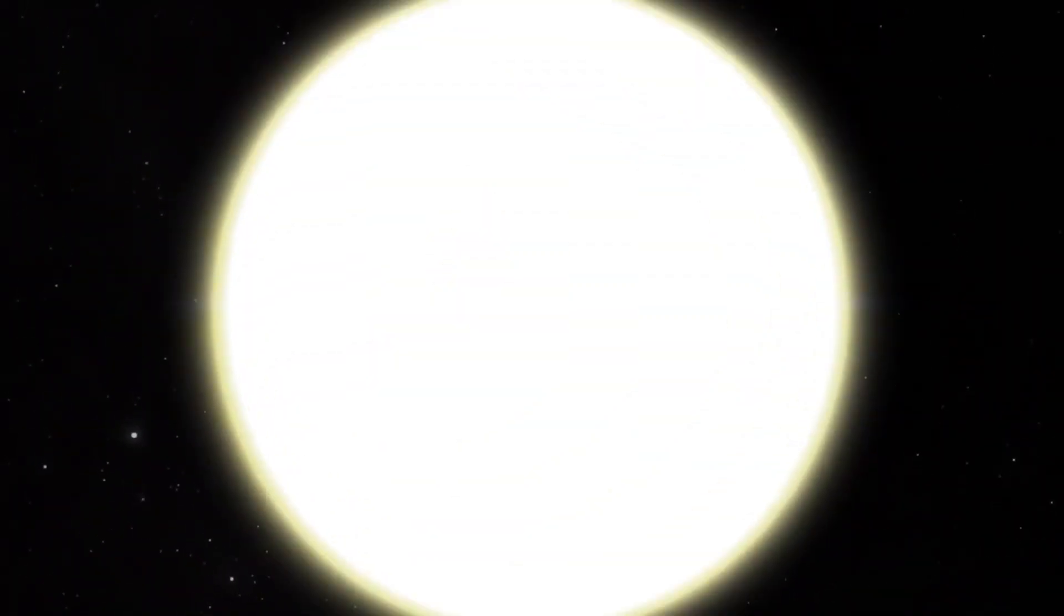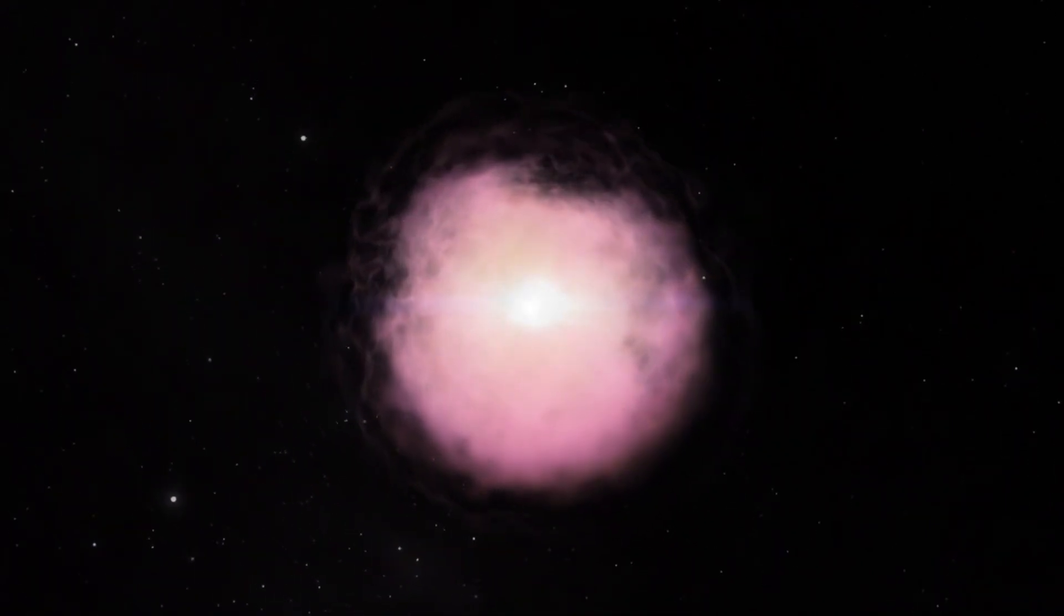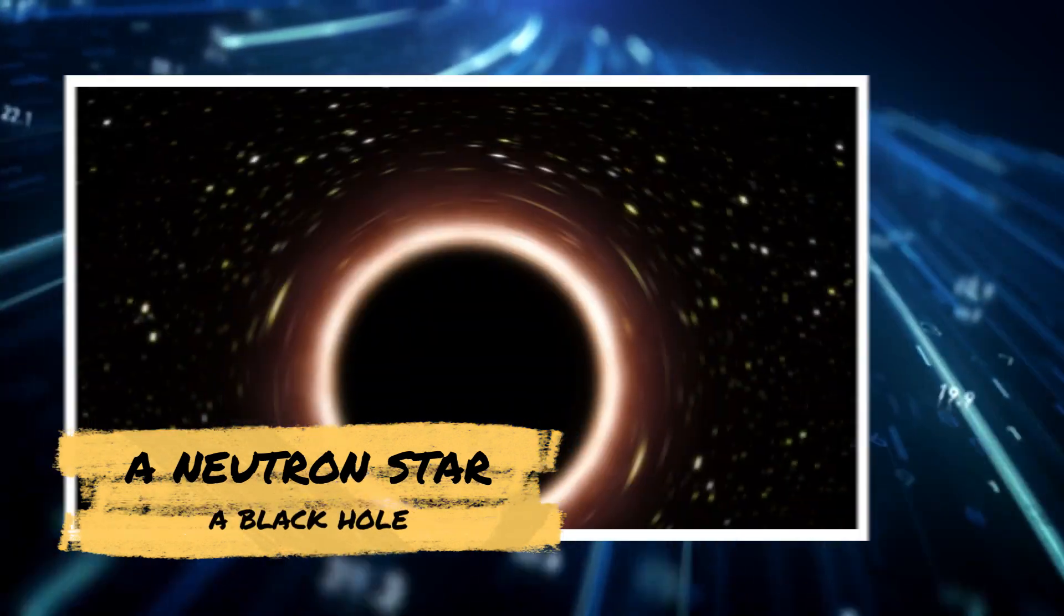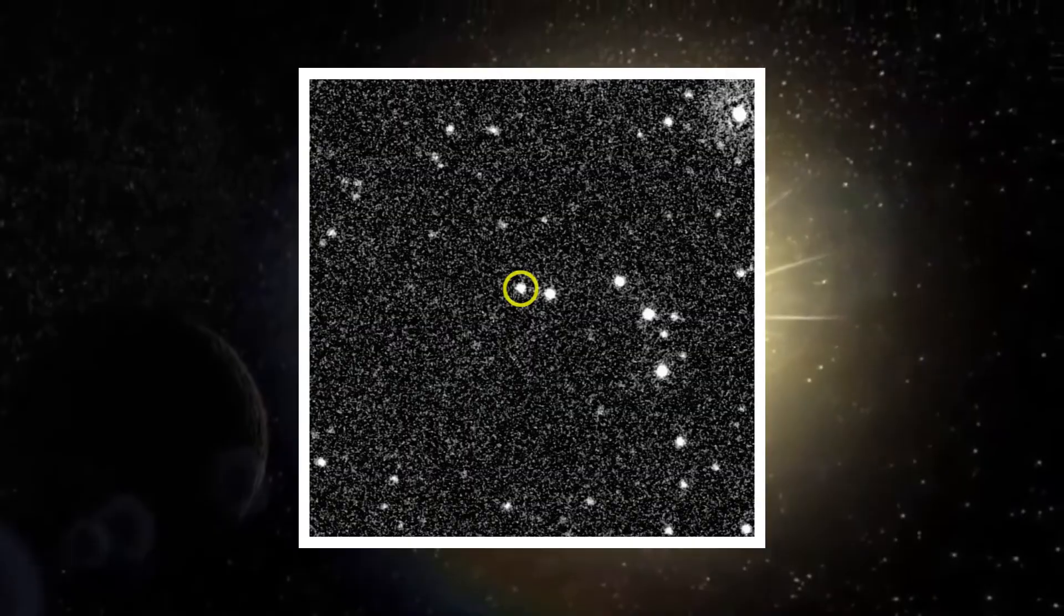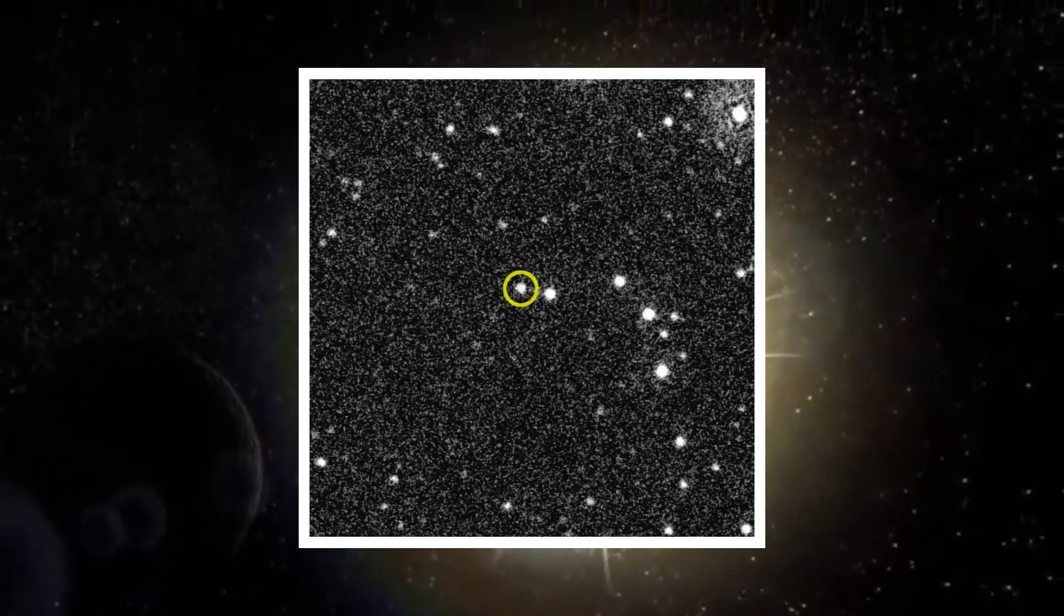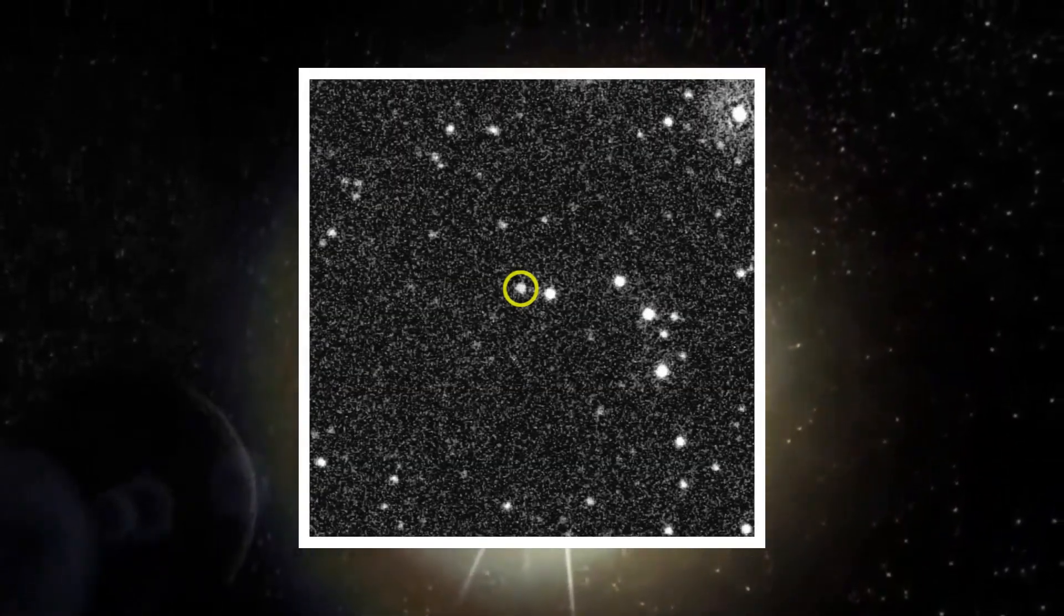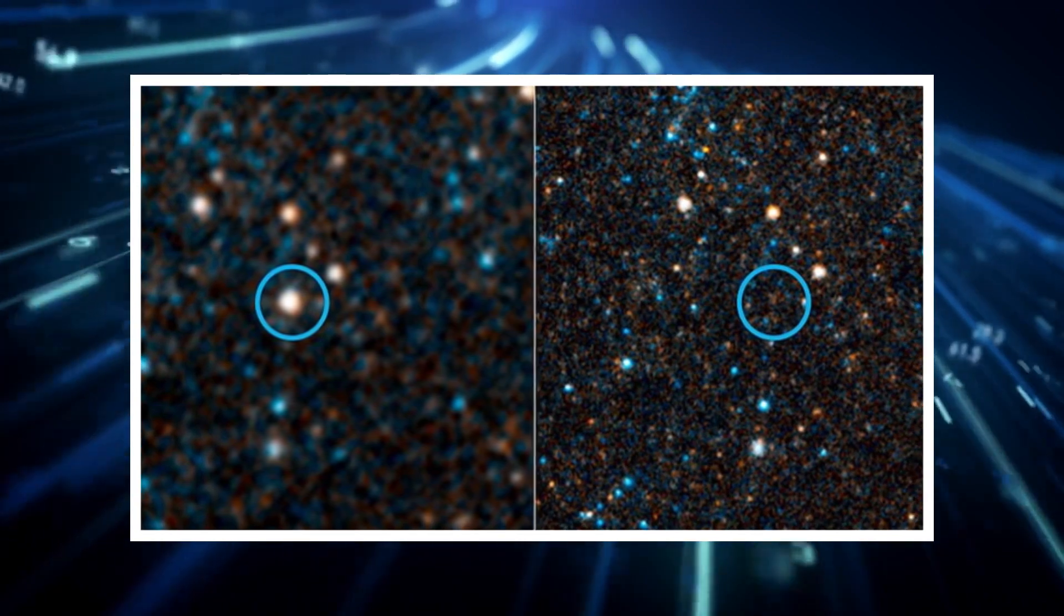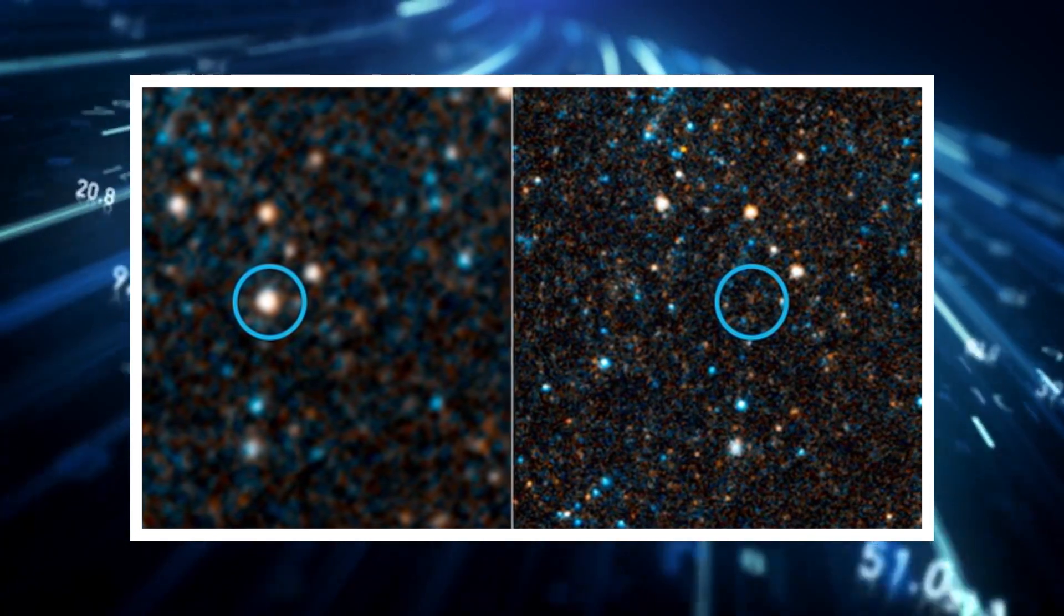This behemoth was believed to be on the brink of a spectacular supernova explosion, leading to either a neutron star or a black hole. However, instead of a grand exit, the star simply dimmed and then vanished. It left no trace, no explosion, no remains, nothing at all.